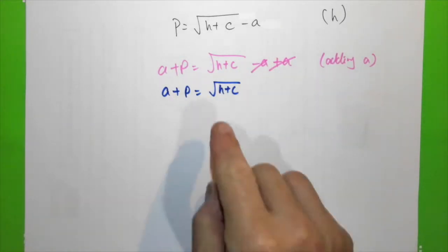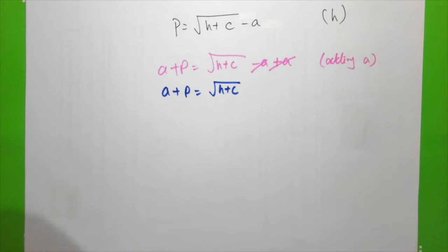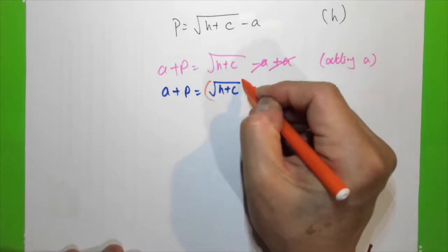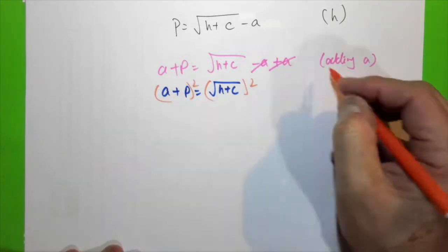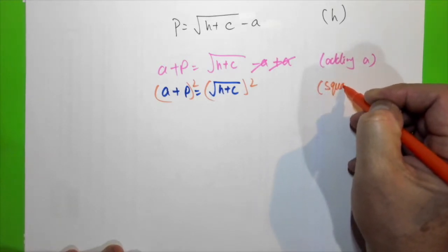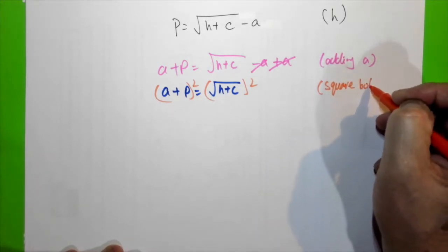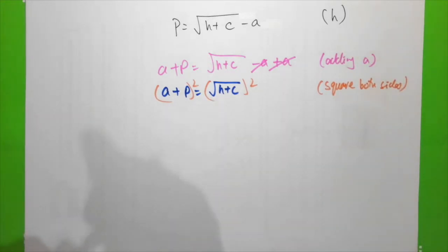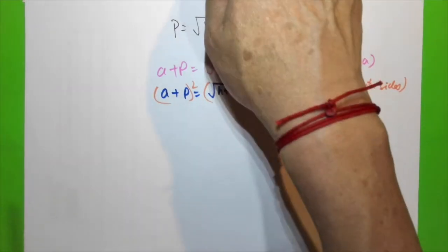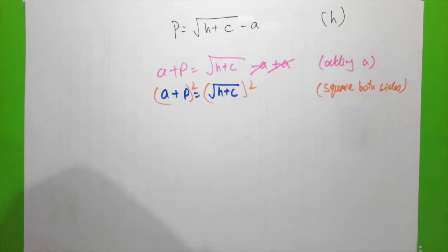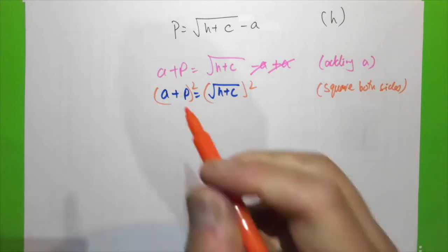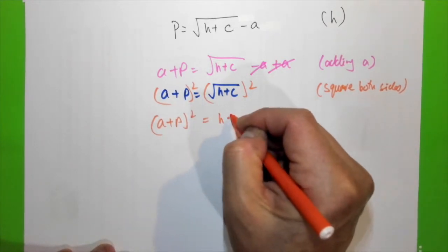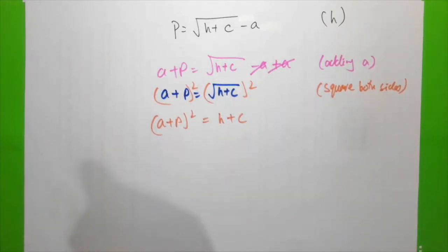In order to eliminate the square root, I square both sides. By squaring both sides I eliminate the square root, and therefore we have (a + P)² = h + c.